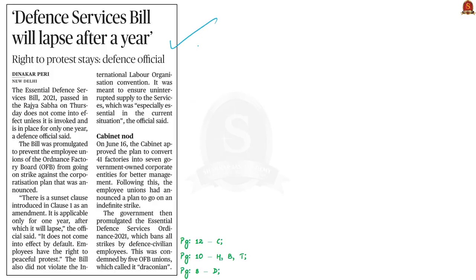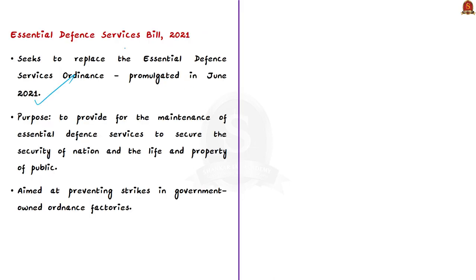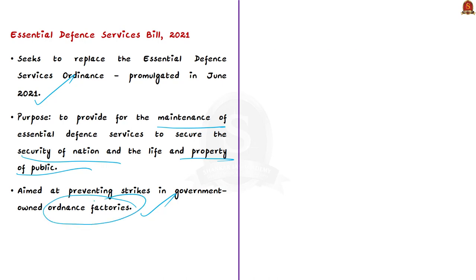The next discussion is based on the Essential Defense Services Bill of 2021, introduced in the Lok Sabha by the Union Minister of Defense in July 2021. This bill seeks to replace the Essential Defense Services Ordinance promulgated by the President in June 2021. A Defense Ministry official clarified that employees still have the right to peaceful protest because the bill does not come into effect unless invoked. The bill aims to maintain essential defense services for the security of the nation and life and property of the public. Its primary objective is to prevent staff of government-owned ordinance factories from going on strike. The Indian Ordinance Factories are the oldest and largest industrial setup under the Department of Defense Production, forming an integral base for indigenous production of defense hardware and equipment.